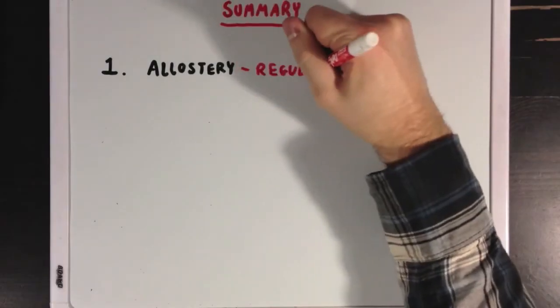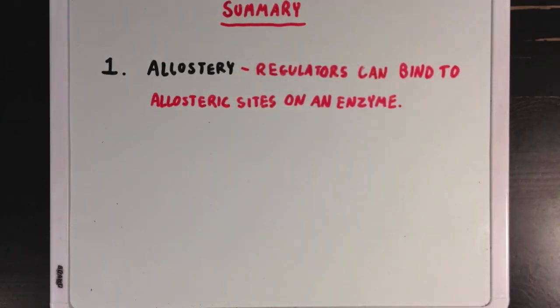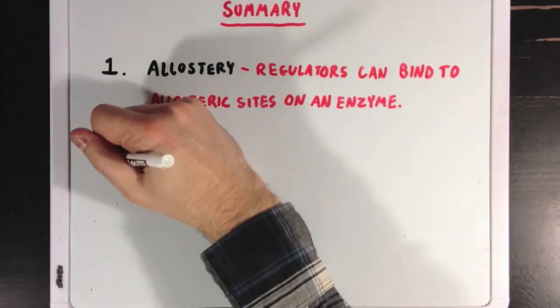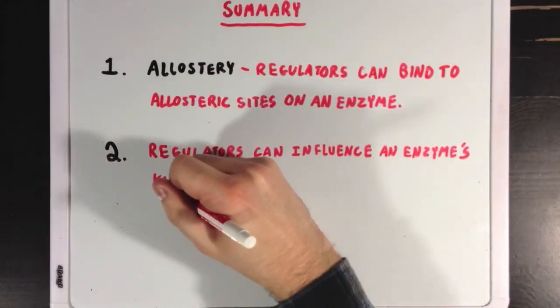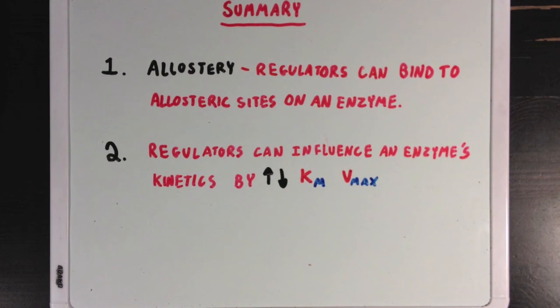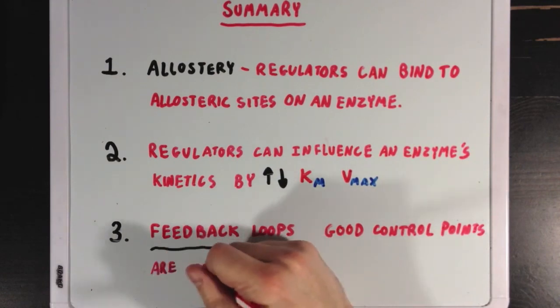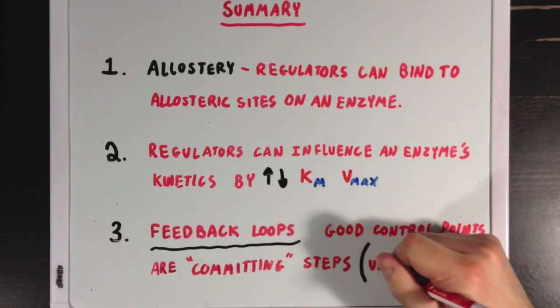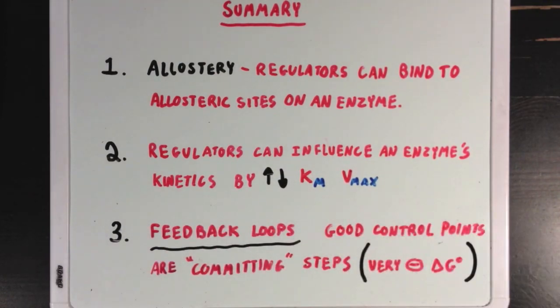So what did we learn? First we learned about the concept of allostery, and how regulatory molecules can bind to allosteric sites instead of active sites. Second, we learned that these allosteric regulators influence an enzyme's kinetics by increasing or decreasing KM or Vmax. And third, we learned about what a feedback loop is, and how in long, multi-step processes like glycolysis, the best control points are highly committing steps, the ones with very negative delta G values.